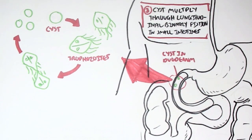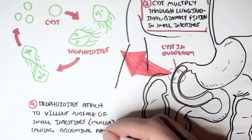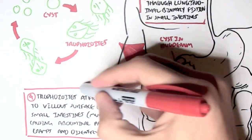And then the trophozoite can then produce cysts, which again, which we'll talk about soon. The trophozoite will attach to the villous surface of the small intestine using its suction discs, causing abdominal pain, cramps, and dysentery.